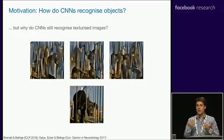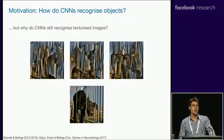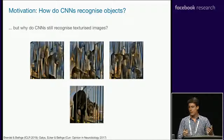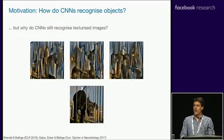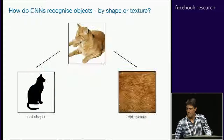This led us to think about a different explanation. We thought, well, maybe the texture — the local statistics, really low-level — rather than the global object shape, could be responsible for CNNs recognizing objects. This is really the texture explanation of CNN object recognition. But how do we find out whether texture or shape is more important for a CNN to recognize objects? To this end, we designed an experiment.